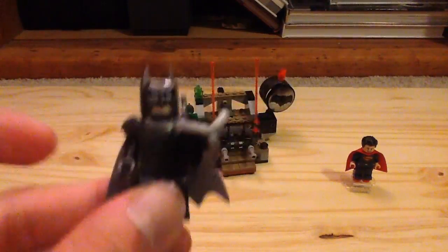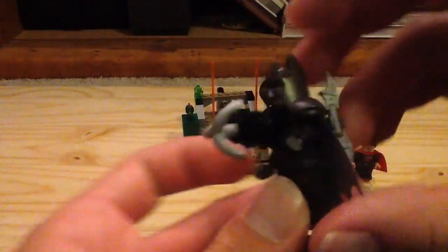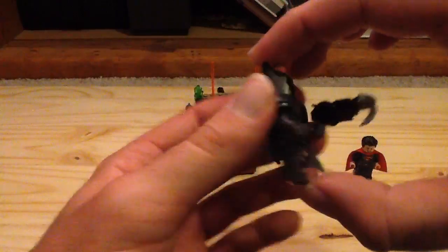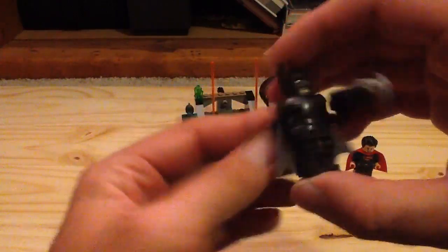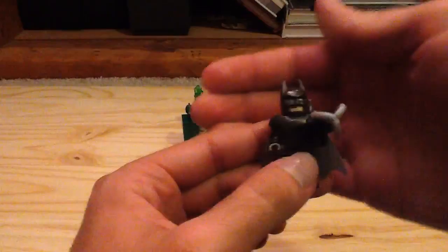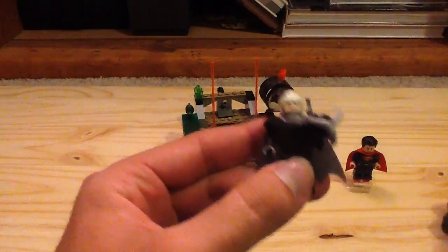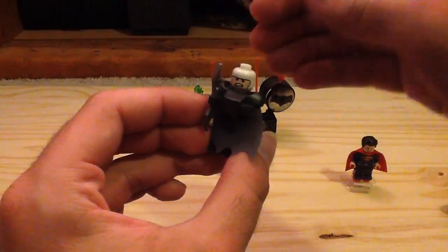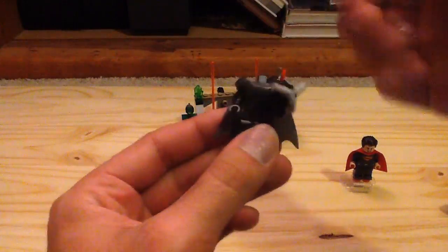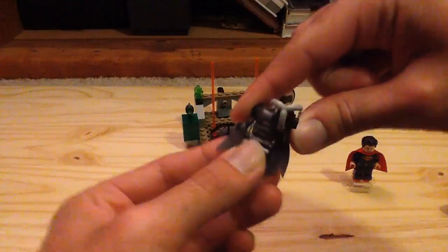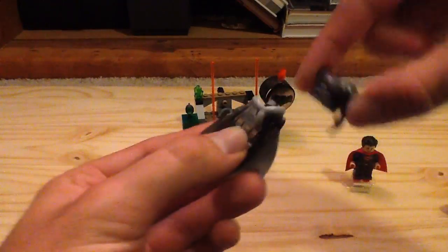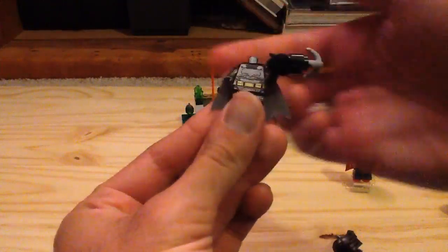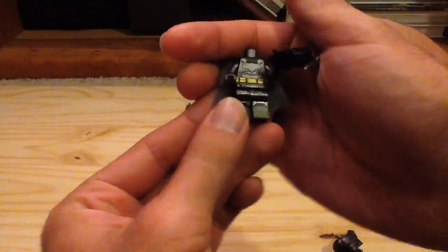And next we have is the Armored Batman, which is exclusive to this set. Love the armor piece on him. He's got the nice cape and the grapple gun. His face also glows in the dark, although I really can't show you right now, but he also has that. Here's his armor. And you can see a better look at his leg print, torso print. Here's his cape.